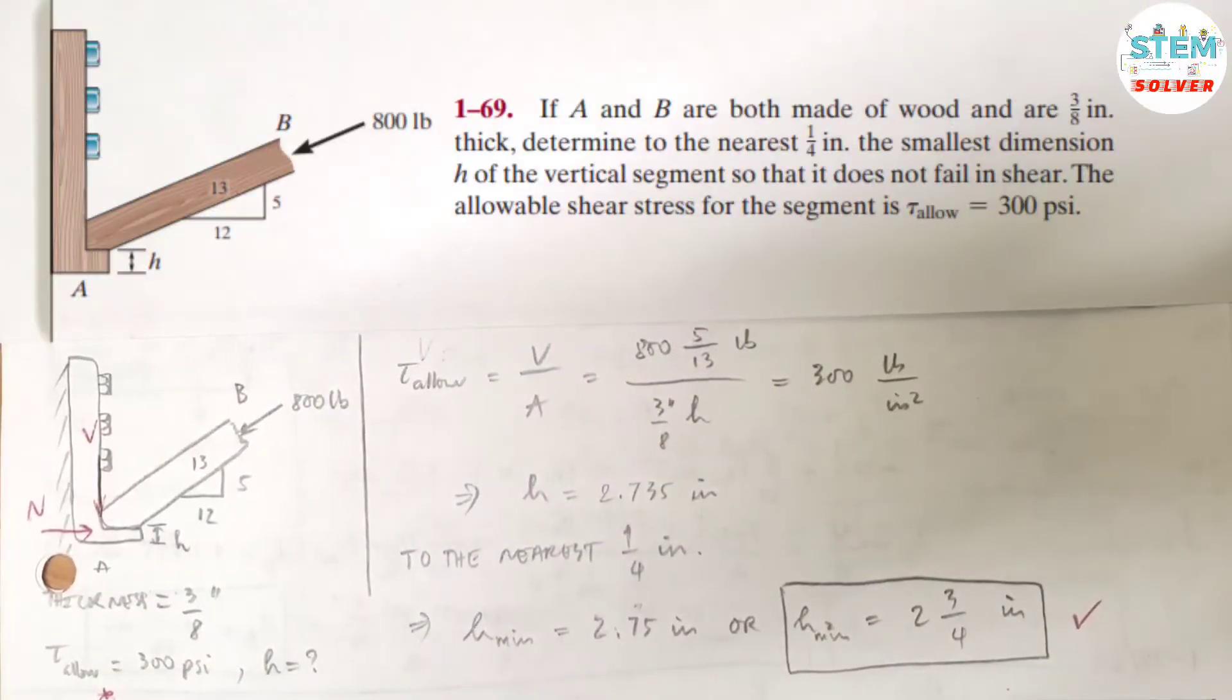If A and B are both made of wood and are 3/8 inch thick, determine to the nearest one-fourth inch the smallest dimension of the vertical segment so that it does not fail in shear. The allowable shear stress for the segment is 300 psi.